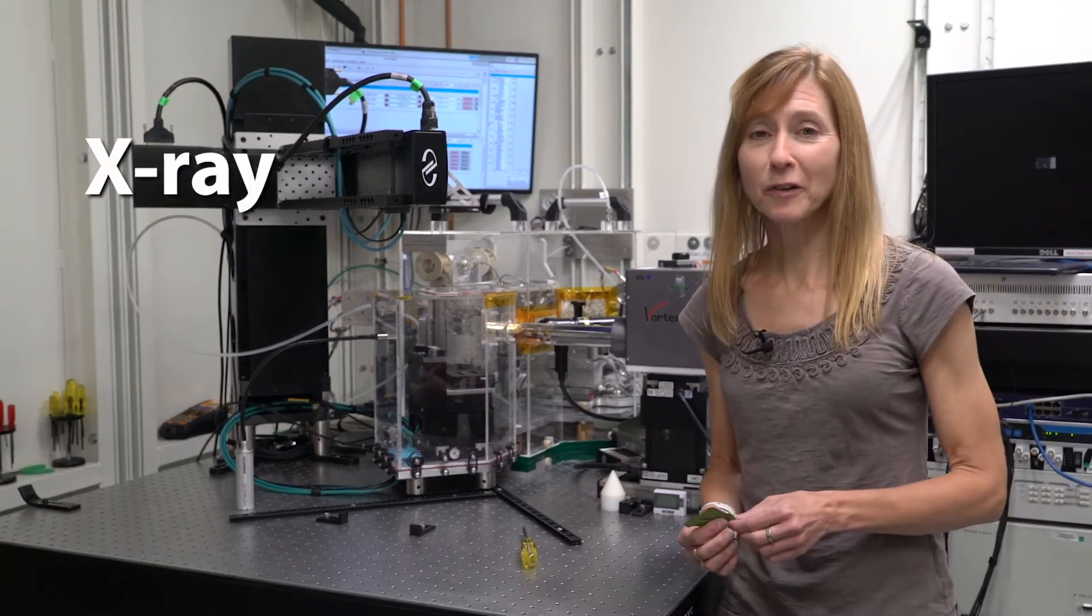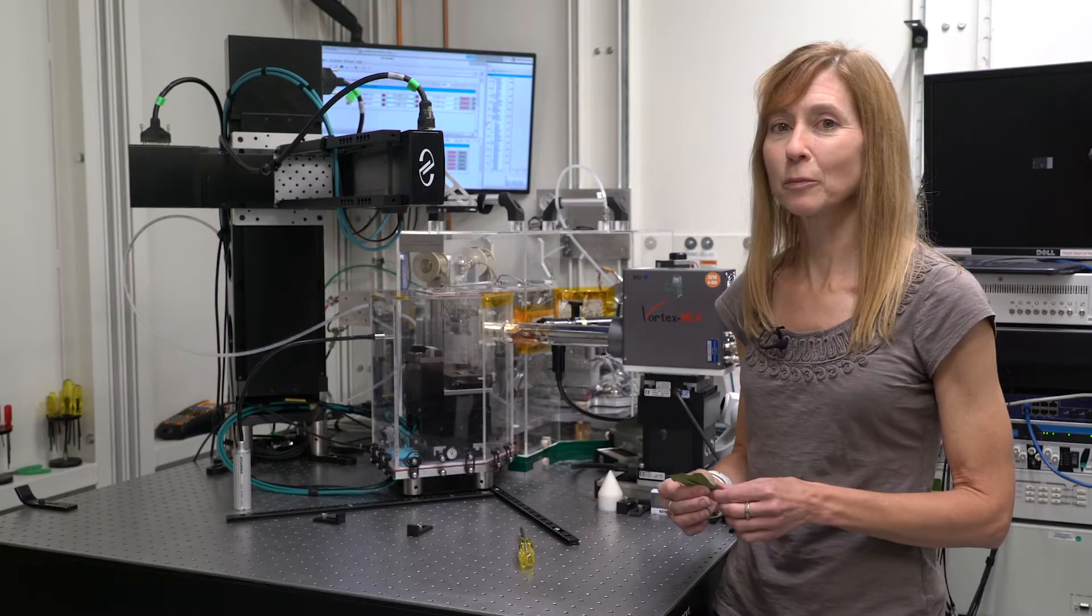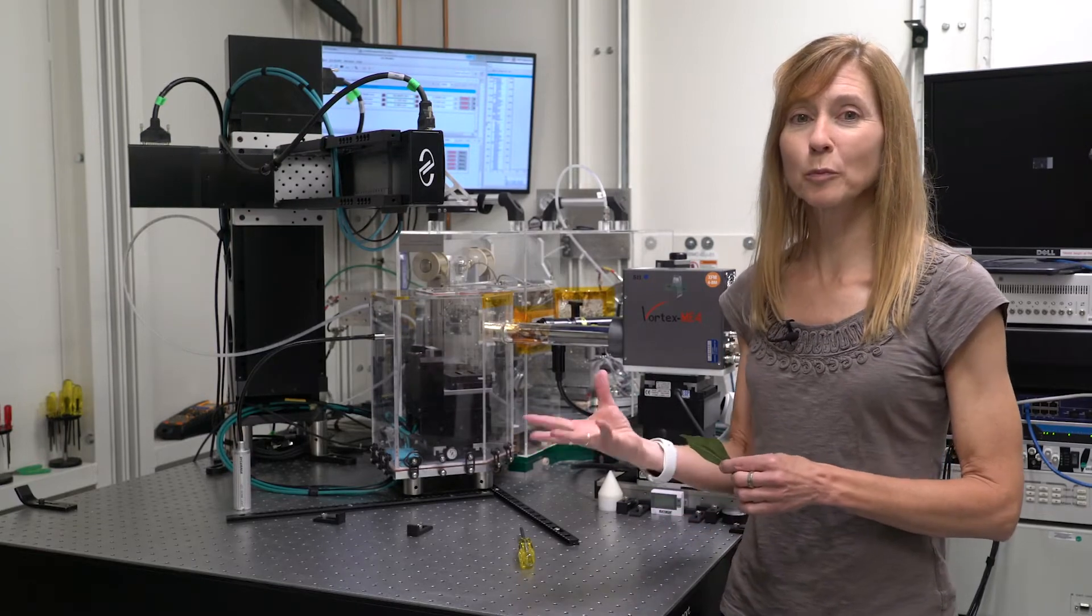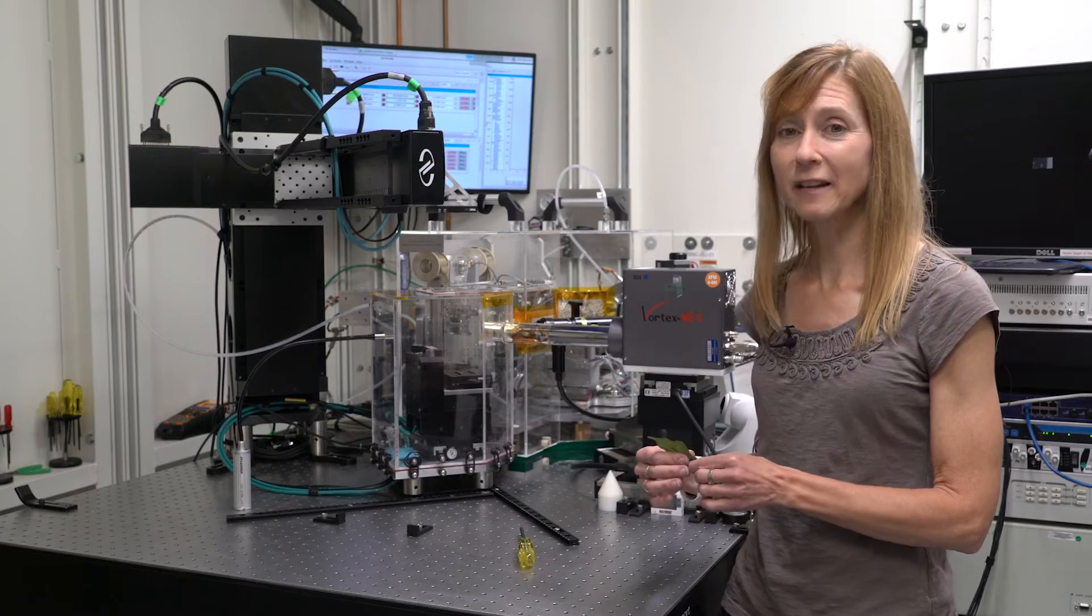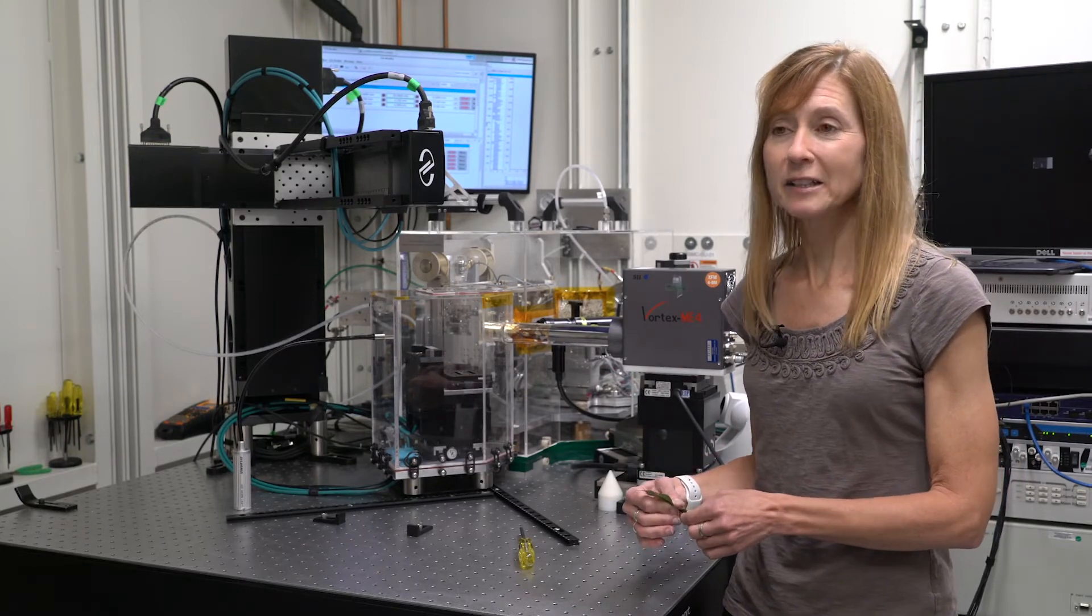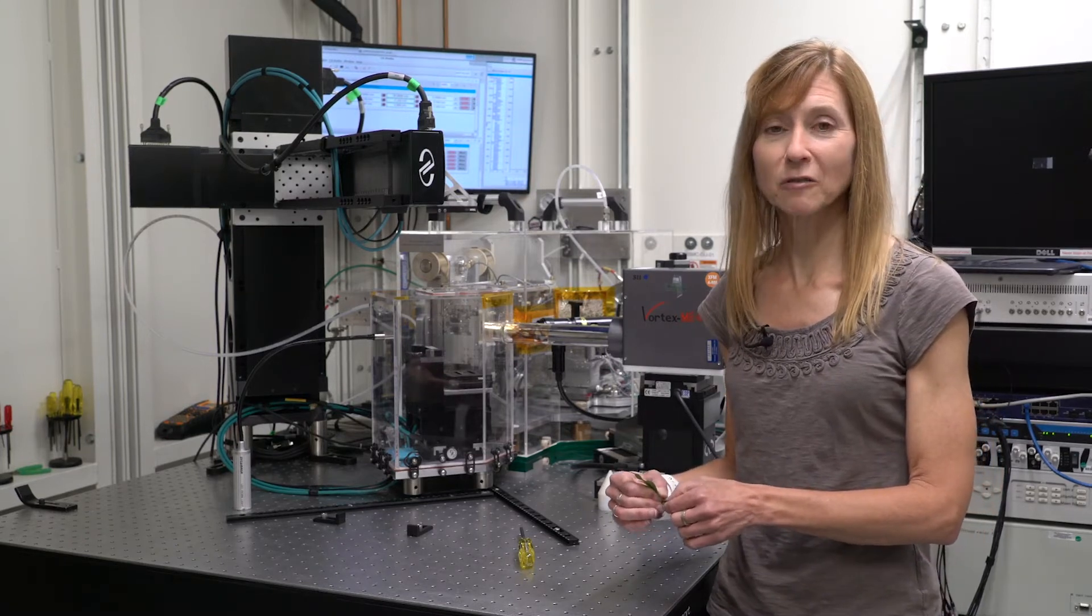This is an x-ray fluorescence microscope beamline or XFM for short and as its name describes, what this does is a very bright x-ray fluorescence microscope and that allows us to see the elemental composition of materials. So one example that I can give you is we can look at the composition of plants.